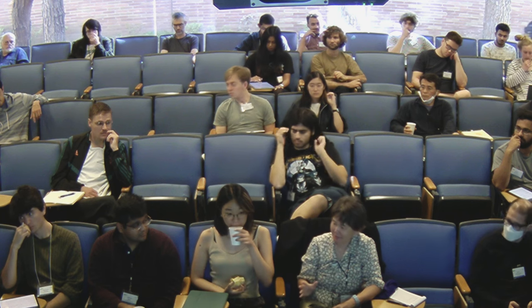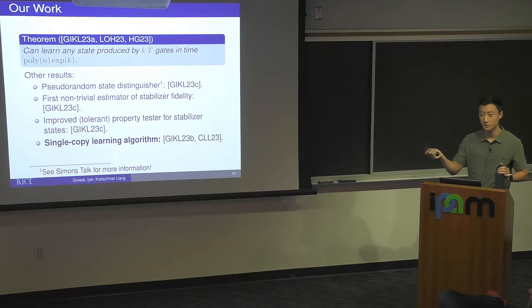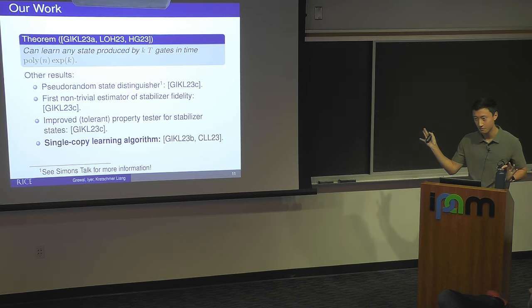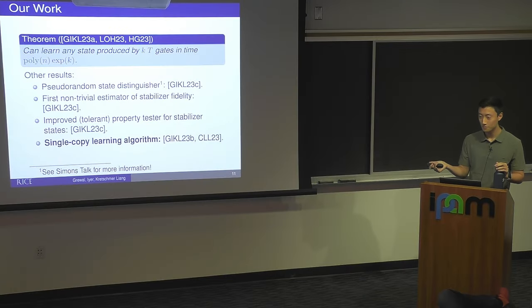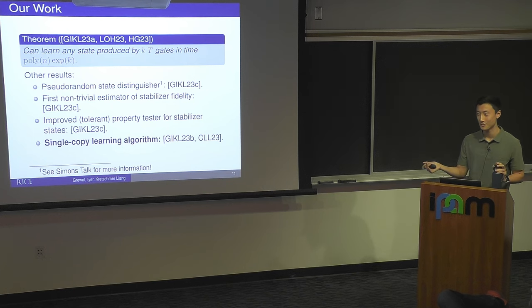By 'learning the state,' I mean tomography — you get a classical description epsilon-close in trace distance, so you can compute the trace of any measurement. On the link between stabilizer rank and T gate count: that's a large open question. You can trivially show stabilizer rank is at most exponential in the number of T gates, but the best lower bounds on stabilizer rank are only linear. It's a huge open problem.